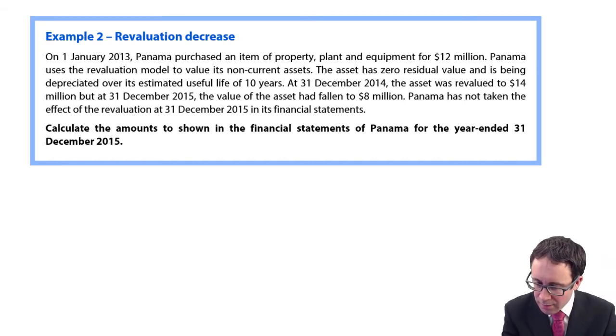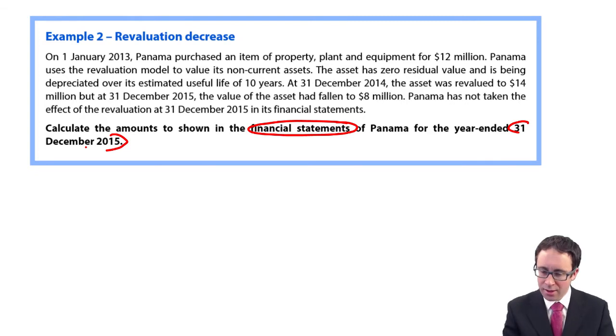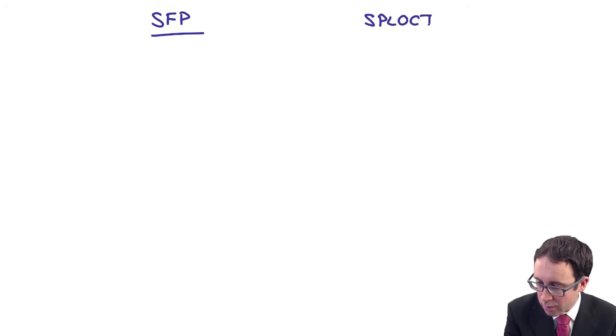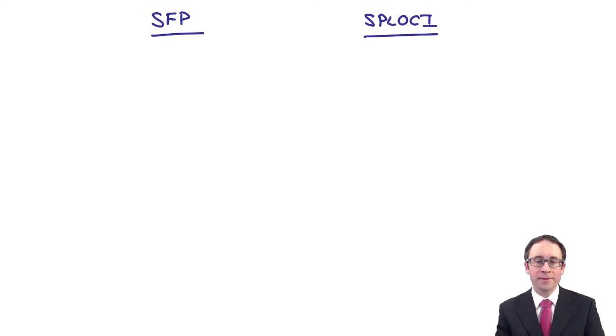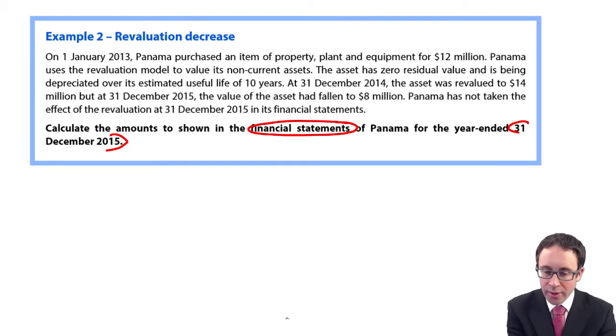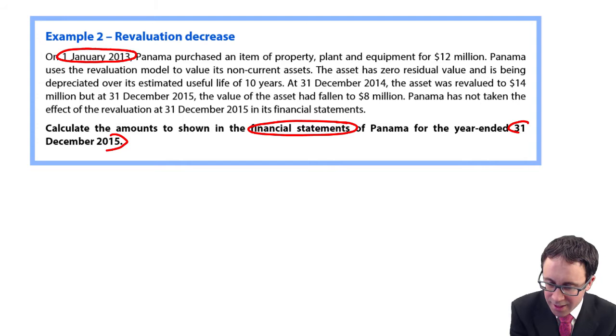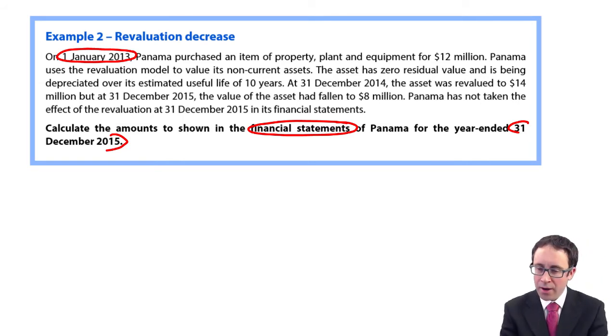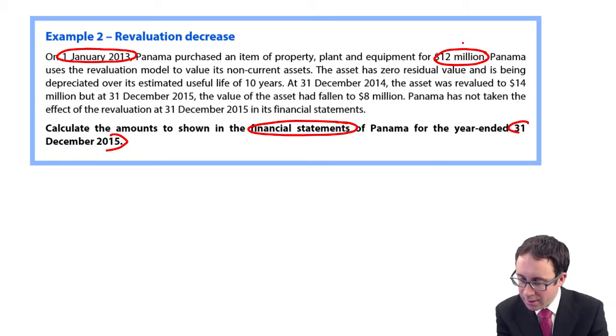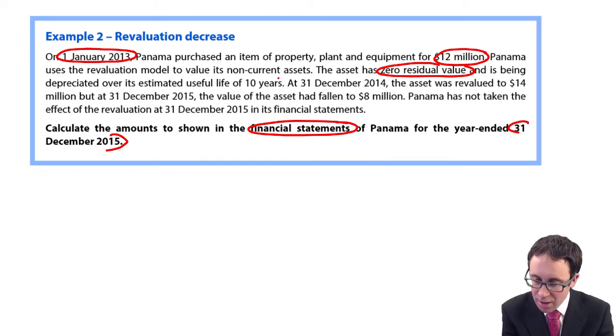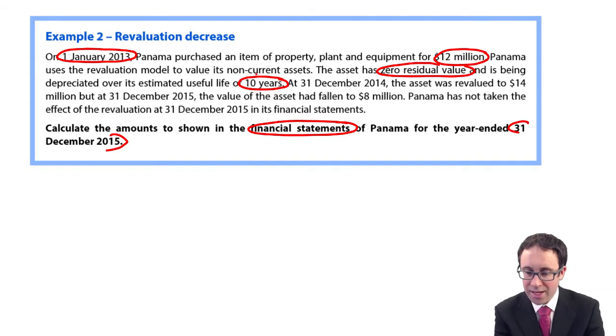Let's read the requirement first. It wants the amount shown within the financial statements of this company Panama for the year ending the 31st of December 2015 - the statement of financial position and statement of profit or loss. On the 1st of January 2013, that's two years ago, Panama purchased an item of property, plant and equipment for $12 million. We used the revaluation model. It has zero residual value and it's been depreciated over its life of 10 years.